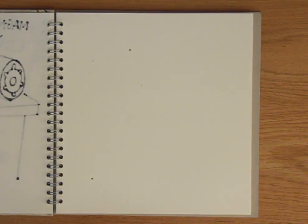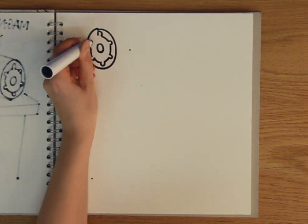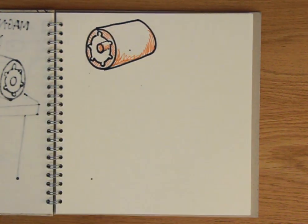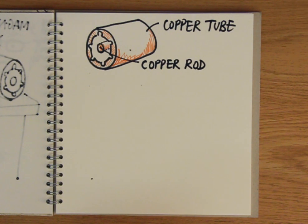So how does a magnetron like the one Spencer was using produce microwaves? The first magnetron was developed in the UK in 1940. It's made up of a copper tube with a copper rod running down the centre and a vacuum between the two.